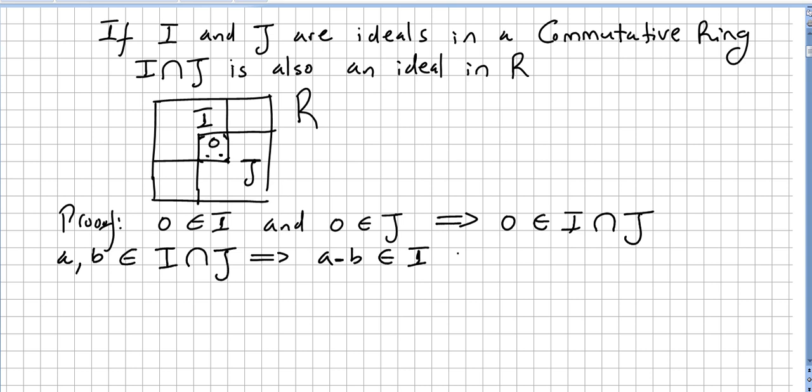Because since it is here it will belong to I, and A minus B will be in J, right, because since it is here it also belongs to J. So because they are both ideals, all this means that A minus B is also in the intersection of J.